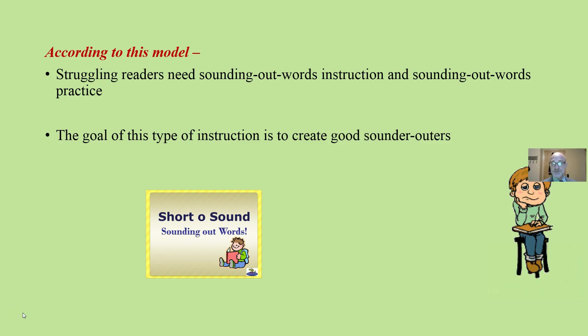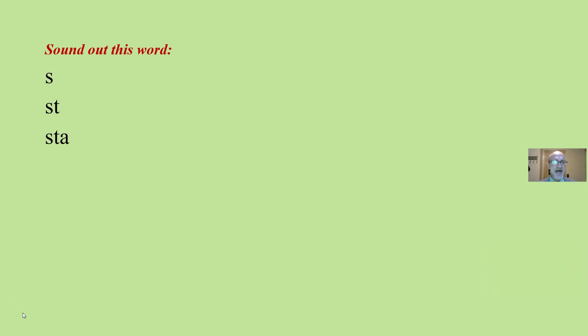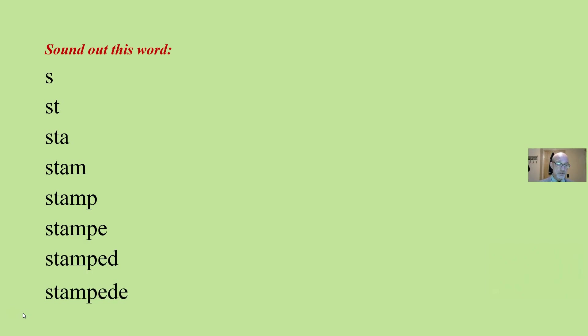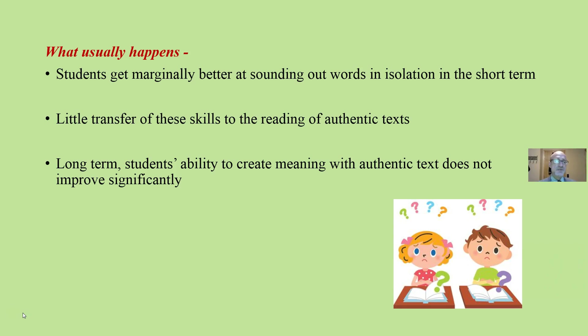So the goal of this type of instruction, according to this model, is to create good sounder-outers. Sound out this word... sound out this word... sound out this word. Sound out this word wasn't very effective, was it? This is what usually happens when we focus only on sounding-out word instruction — students get marginally better at sounding-out words in isolation.